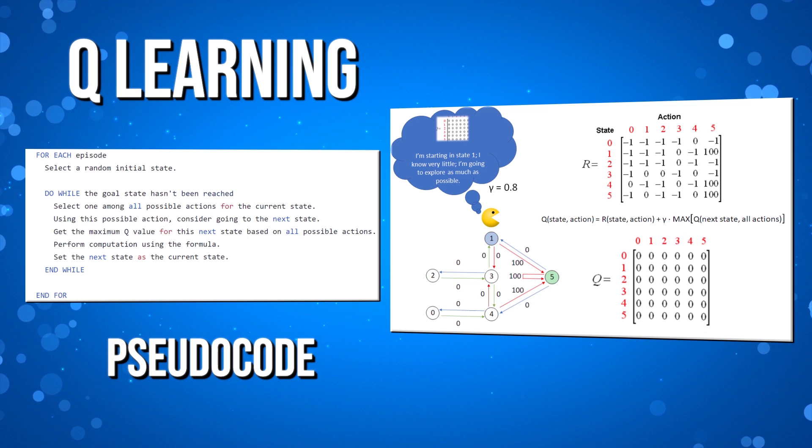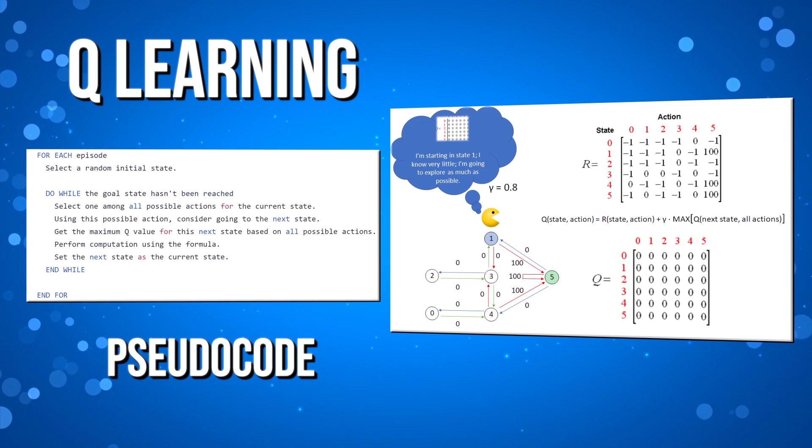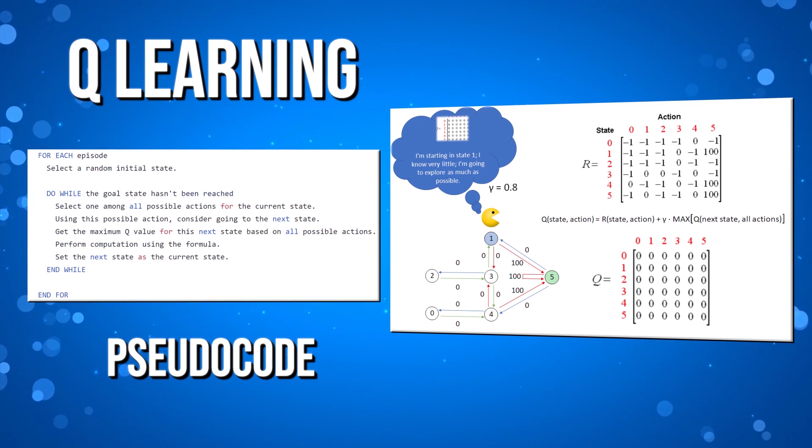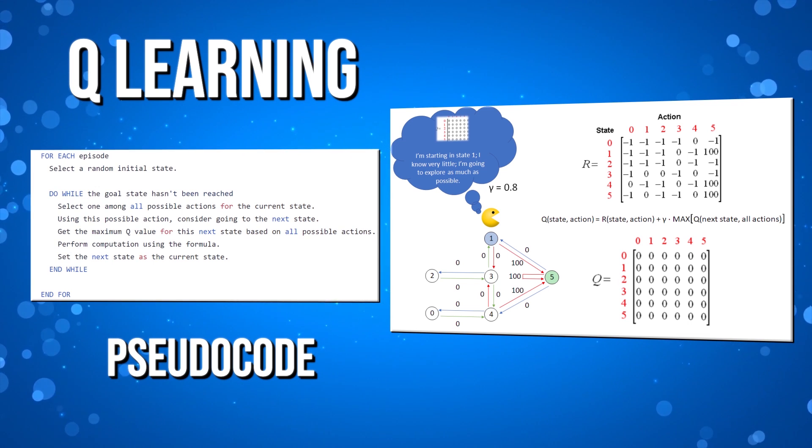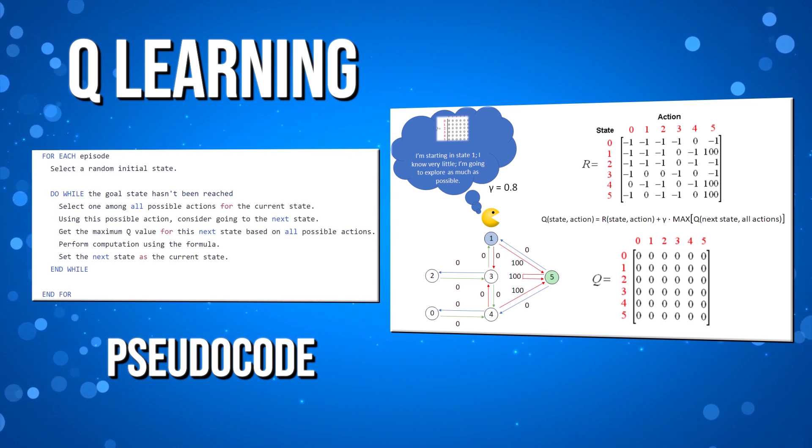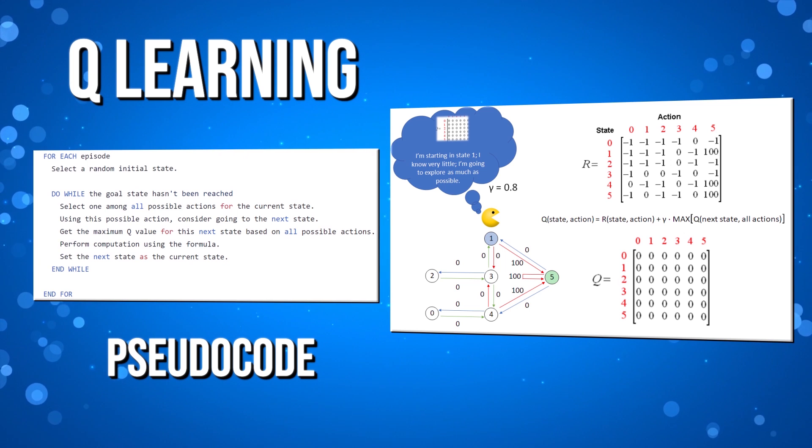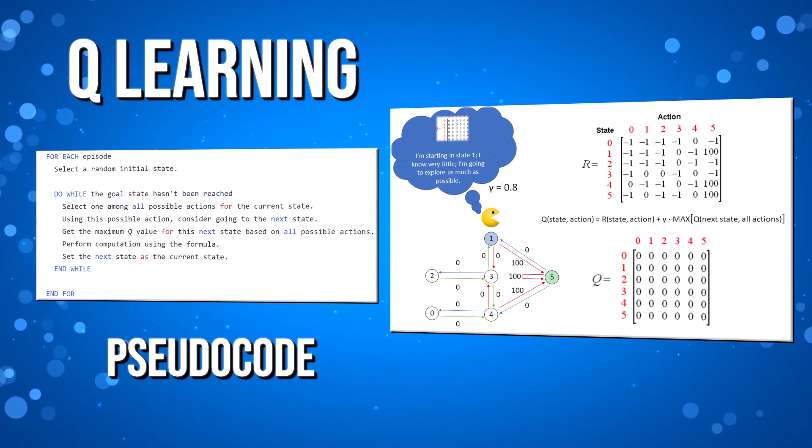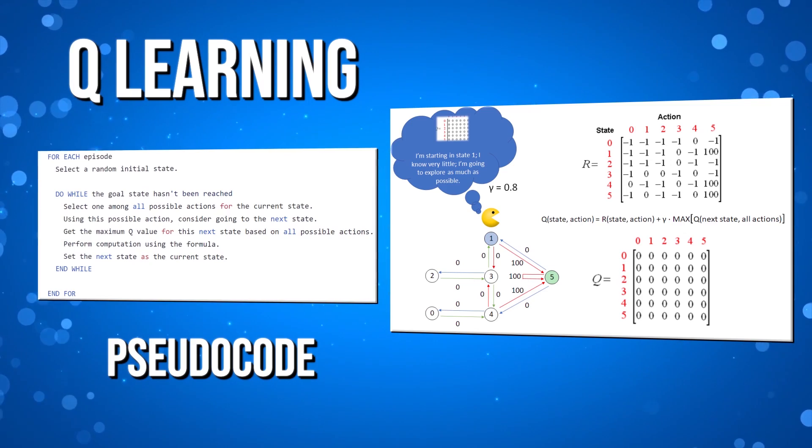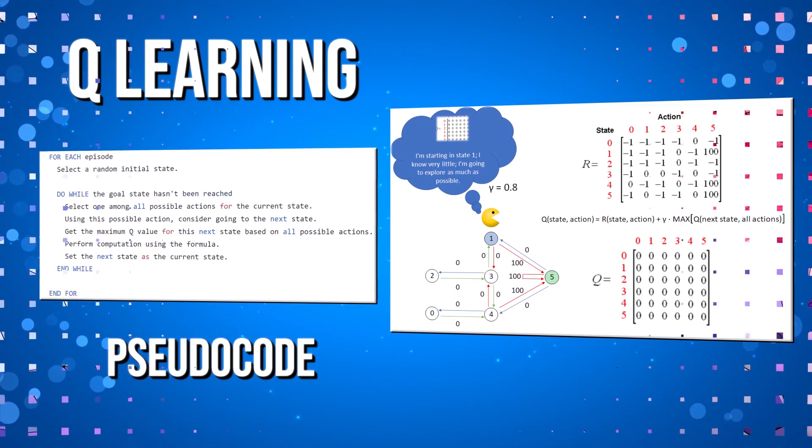By using what's called the Bellman equation, we can write out an equation that relates the value of one state to the value of another state in our environment. Because we are able to relate states across time to each other mathematically using the Bellman equation, we can use any number of methods to iteratively approximate our Q function.